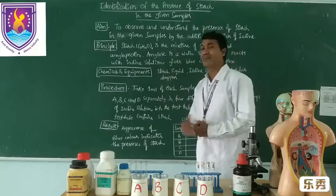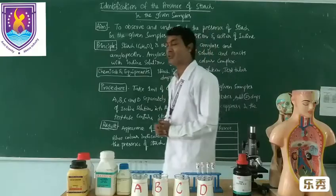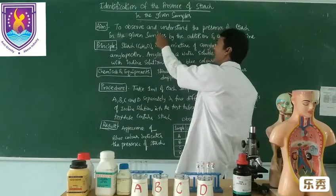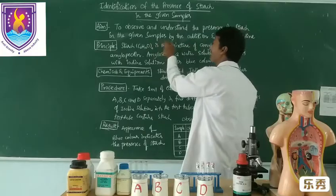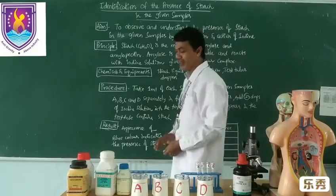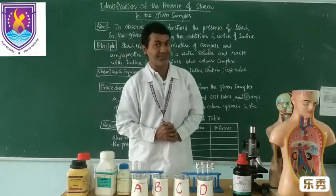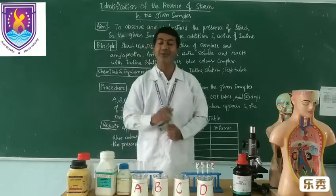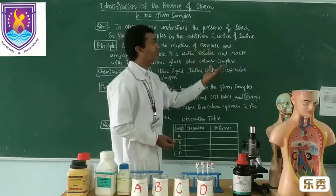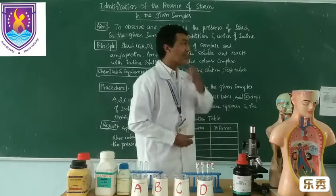So let us discuss today. First of all, there are some steps involved, and you have to mention them in the examination — you have to write in this way. First of all, write the aim. The aim is to observe and understand the presence of starch in the given samples by the addition and action of iodine. Here four samples are given; among these four, one sample contains starch. You need to identify in which sample starch is present. We add iodine and understand how iodine acts with starch and what the inference is.